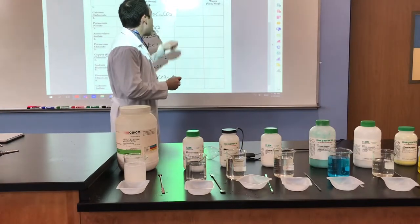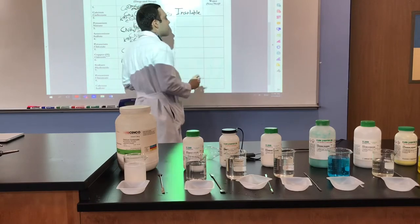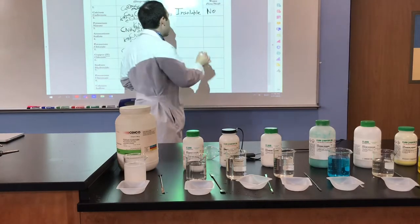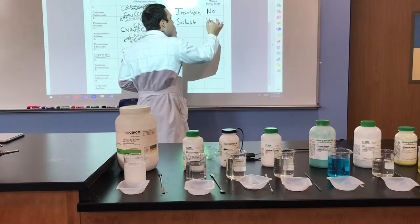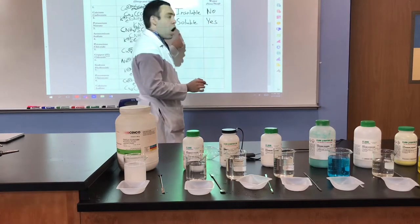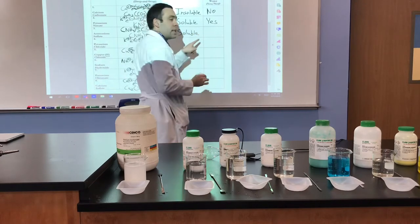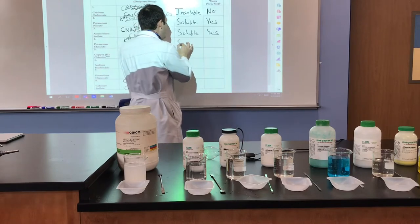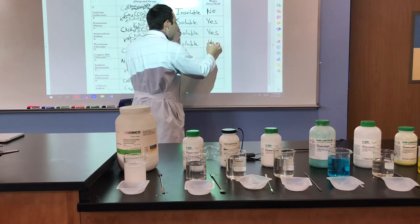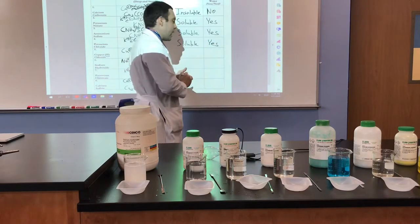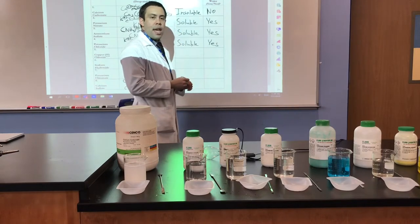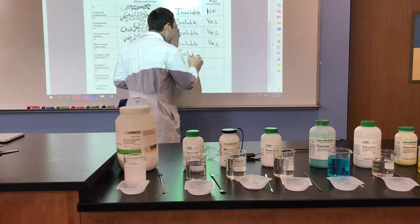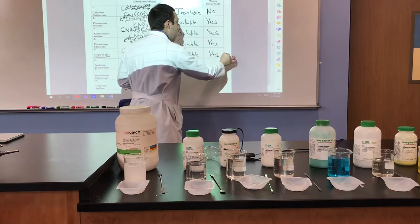To recap: calcium carbonate was insoluble in water and did not really conduct electricity. Potassium nitrate — group 1 elements are always soluble in water, so potassium nitrate was soluble and the light bulb did go on. Ammonium is always soluble in water, so ammonium sulfate dissolved and the light bulb went on. Potassium chloride — potassium is a group 1 element, always soluble, and the light bulb went on. Copper chloride — chlorides on the left side of Table F are soluble in water except with silver, lead, and mercury. Since copper is not one of those three, it is soluble, the light bulb did go on, and we made our blue solution.